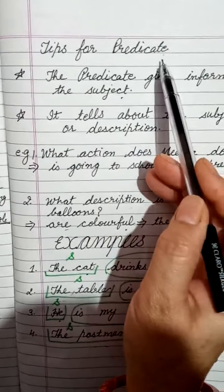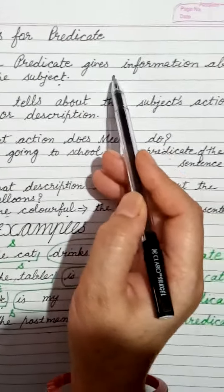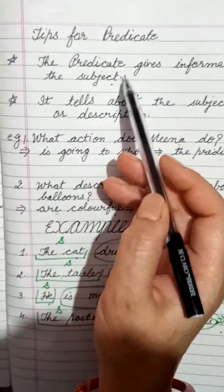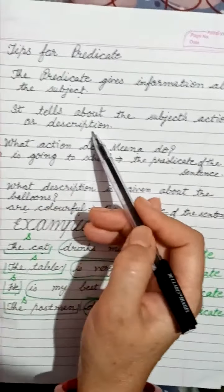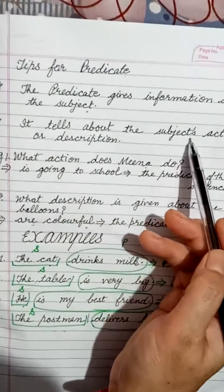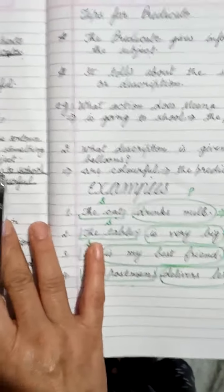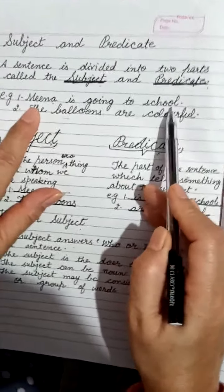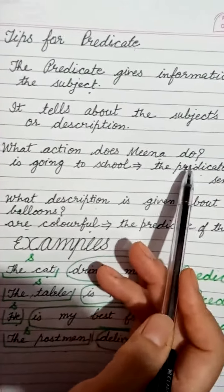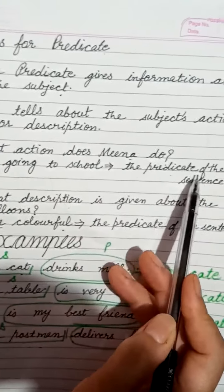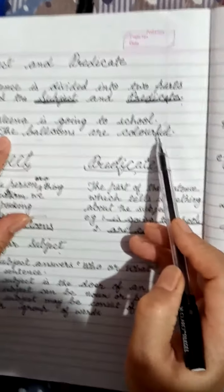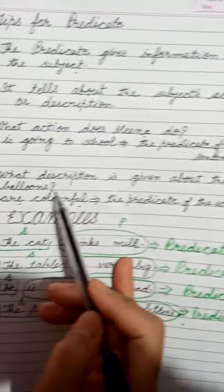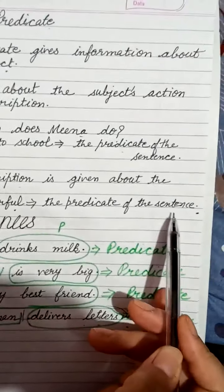There are some tips for the predicate also. First, the predicate gives information about the subject. It tells about the subject's action or description. As in the first sentence, 'Mina is going to school' — is going to school tells the action Mina does, so that is the predicate. In the second sentence, 'the balloons are colorful' — are colorful gives a description of the balloons, so that is the predicate.